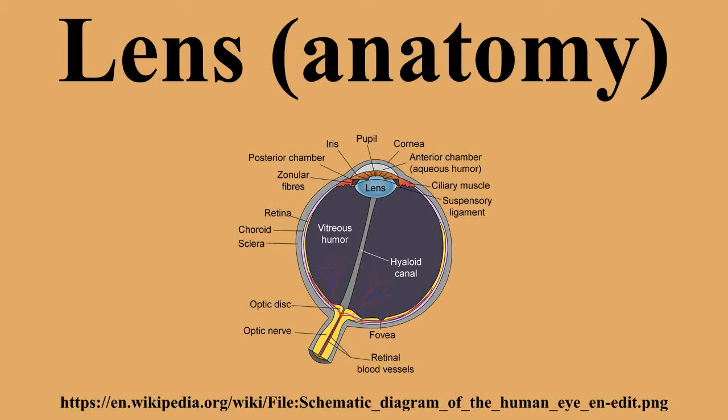The lens has three main parts: the lens capsule, the lens epithelium, and the lens fibers. The lens capsule forms the outermost layer of the lens, and the lens fibers form the bulk of the interior of the lens. The cells of the lens epithelium, located between the lens capsule and the outermost layer of lens fibers, are found only on the anterior side of the lens. The lens itself lacks nerves, blood vessels, or connective tissue.